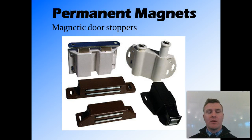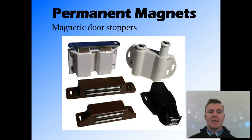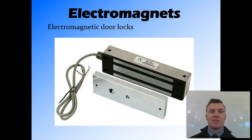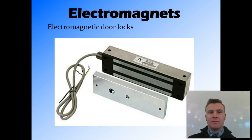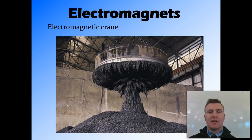Some uses we have for magnets: permanent magnets have a few uses, one of which is a magnetic door stopper, used in cabinets to hold doors closed. Electromagnets can also be used as door stoppers — when turned on, the magnet holds the door locked, and when turned off, say by swiping a card or entering a code, it allows you to open the door. Another use is in an electromagnetic crane, which can pick up metallic items by attracting them to the electromagnet, then turn it off to put the object down somewhere else.